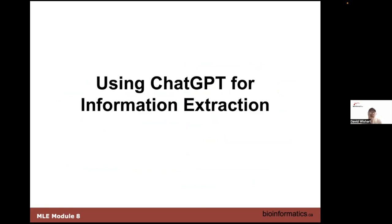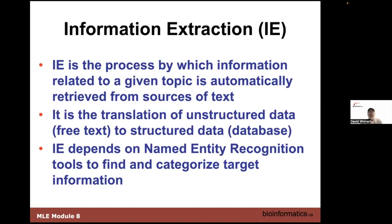That's for coding. You can also take code and ask ChatGPT what's wrong with it, or ask it to add comments so you can better understand. The other application is information extraction, or IE. You're getting information from a topic and retrieving it from sources of text — taking free text unstructured data, sentences, papers, journal articles, and putting it into a structured format like a database. To do IE you need named entity recognition to recognize nouns and what types they are, then categorize that information.